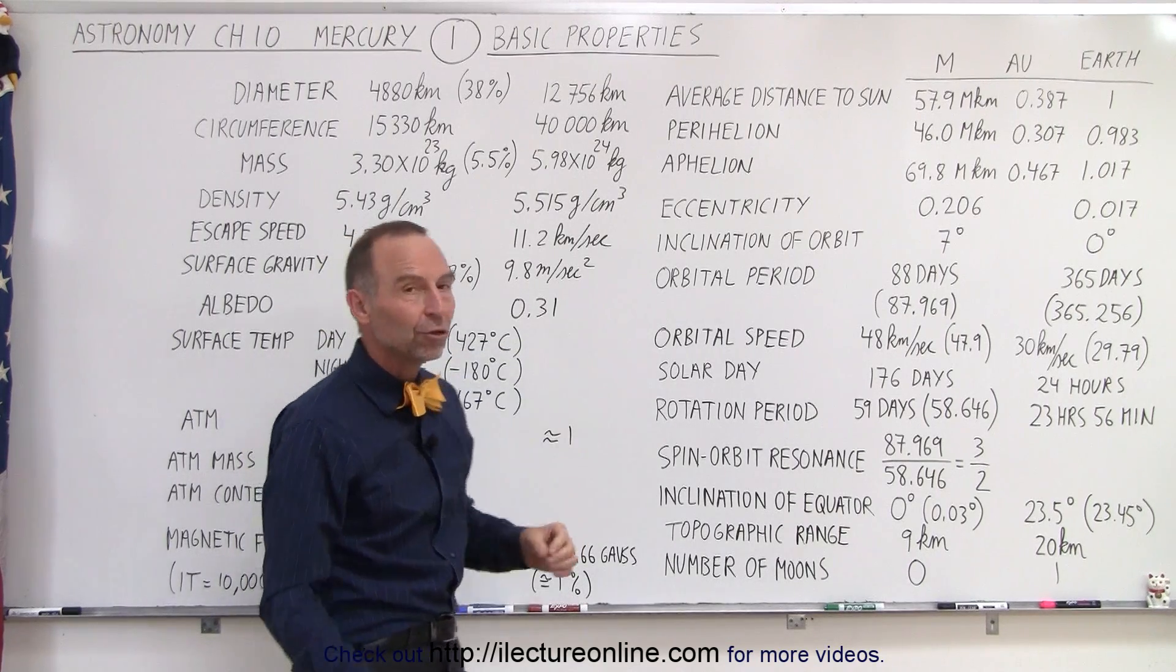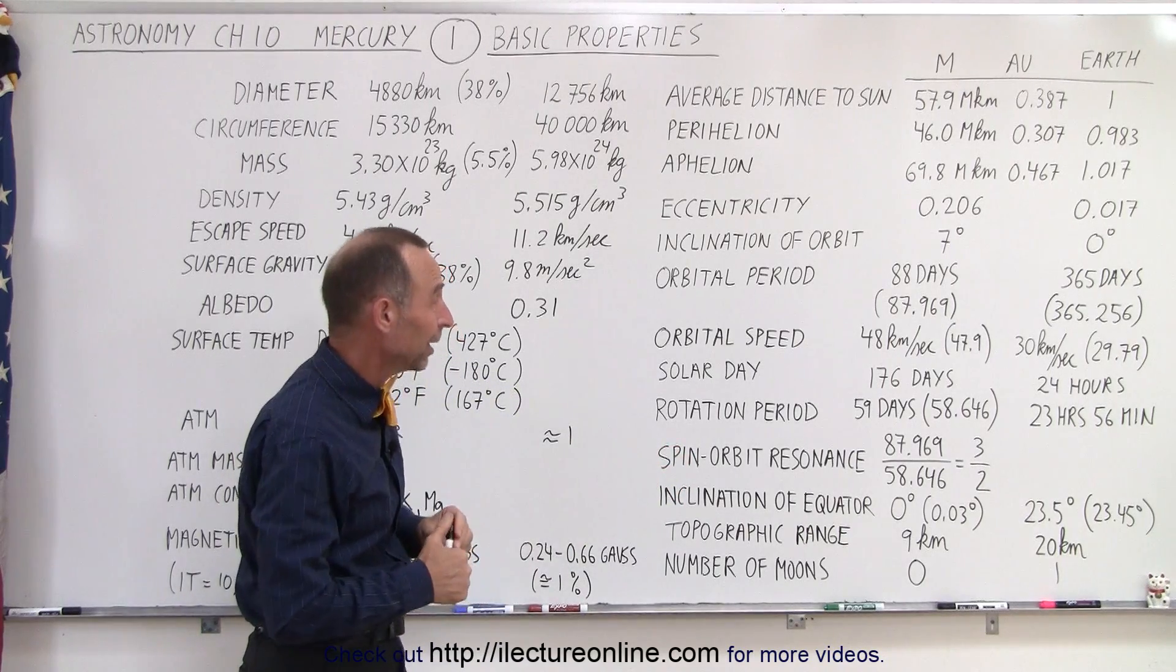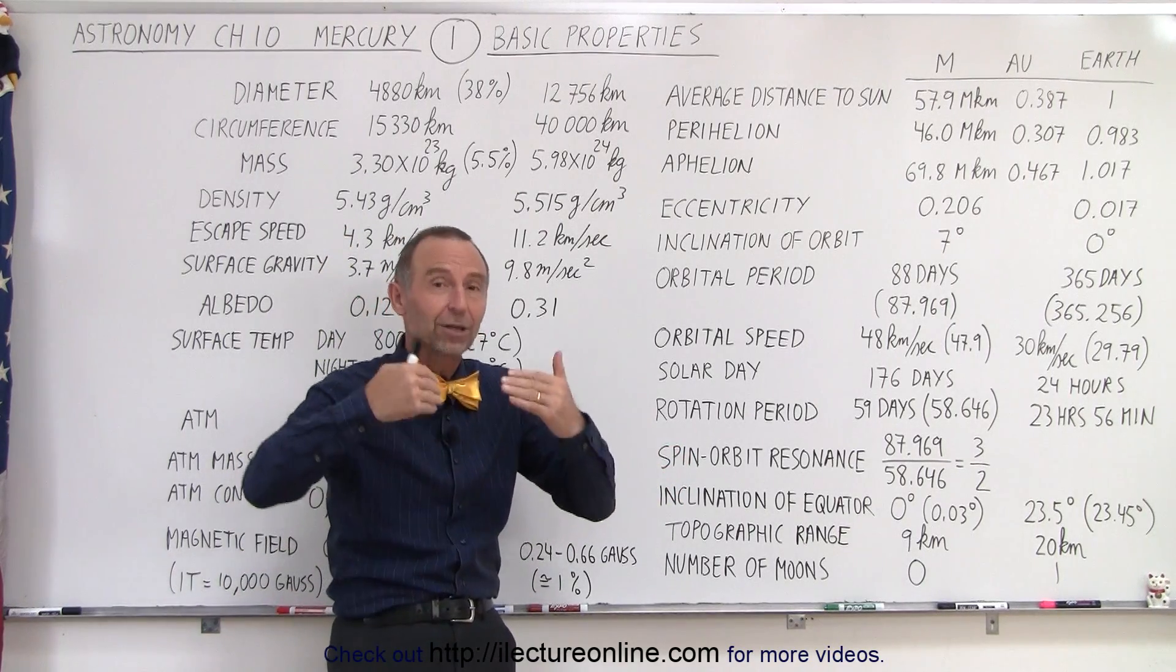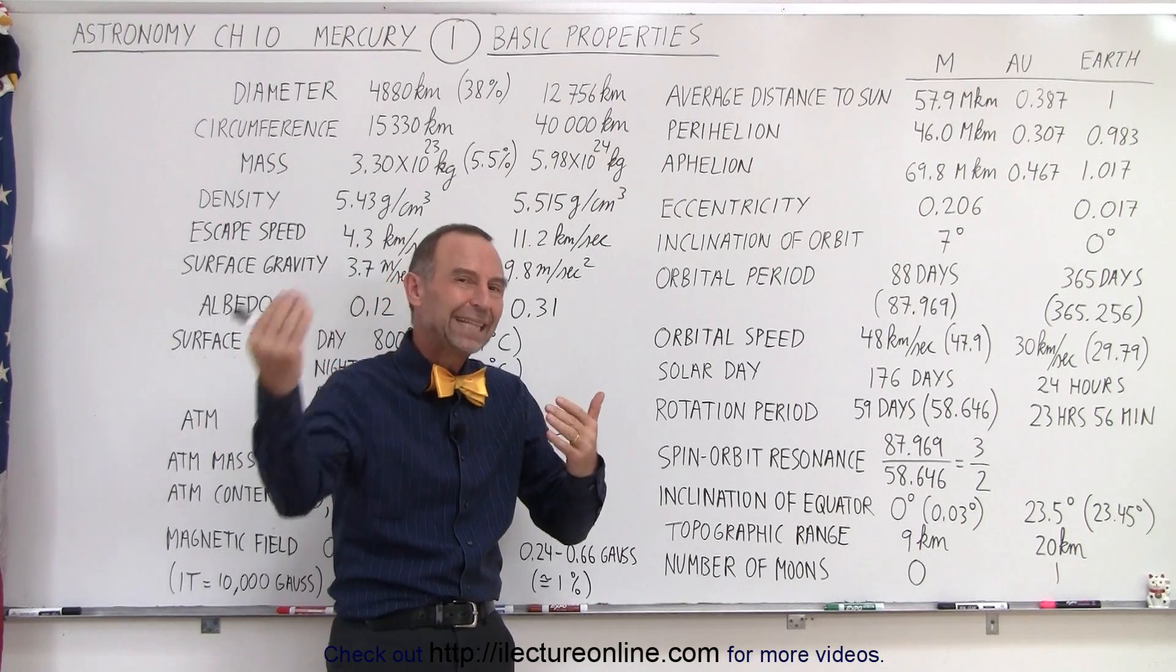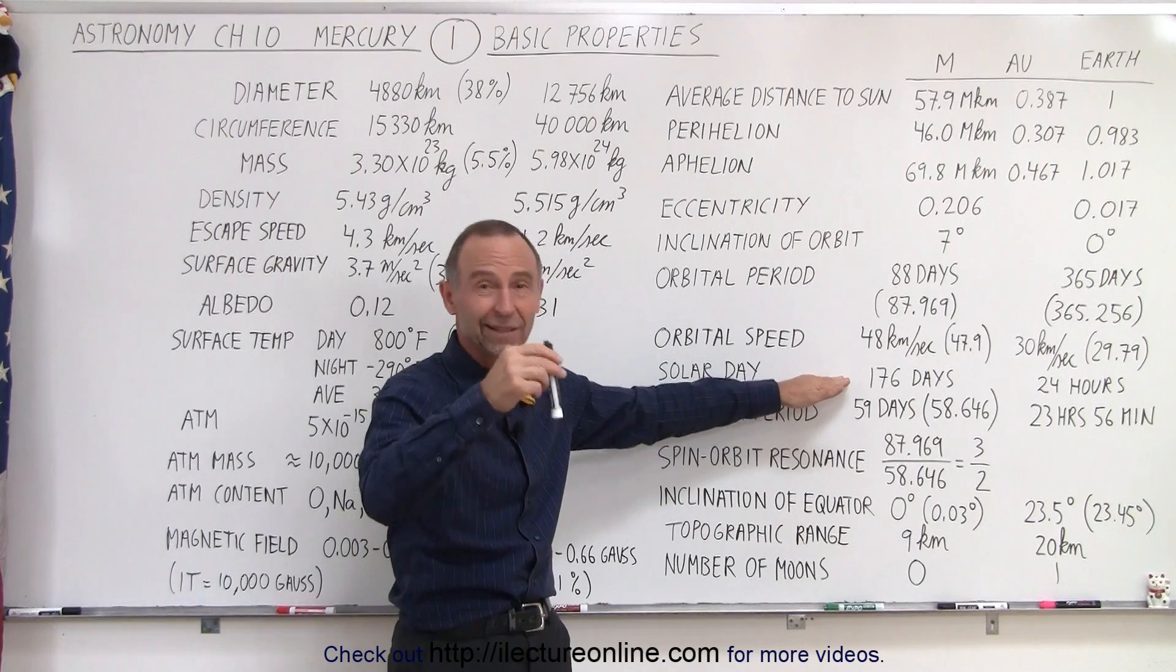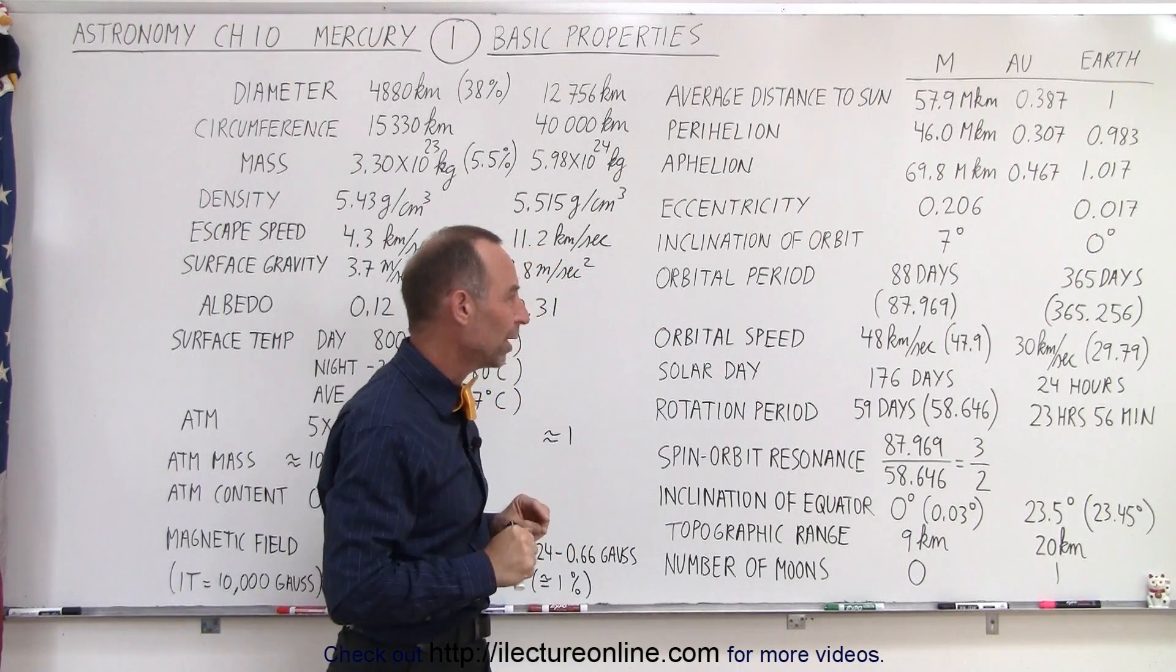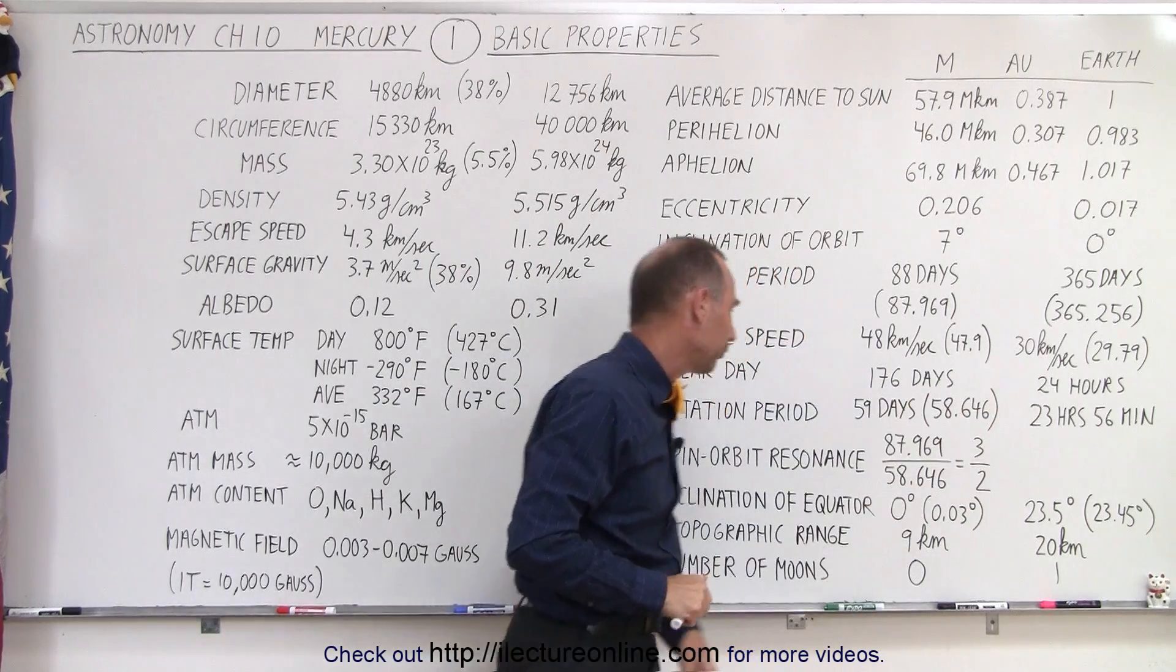Notice a solar day if you stand on Mercury, not recommended because it's not a very hospitable place, but if you were to be able to stand on Mercury and watch a complete Mercury day go by, it would take 176 Earth days between, let's say, noon and the very next Mercury day noon as well. Versus only 24 hours for the Earth.